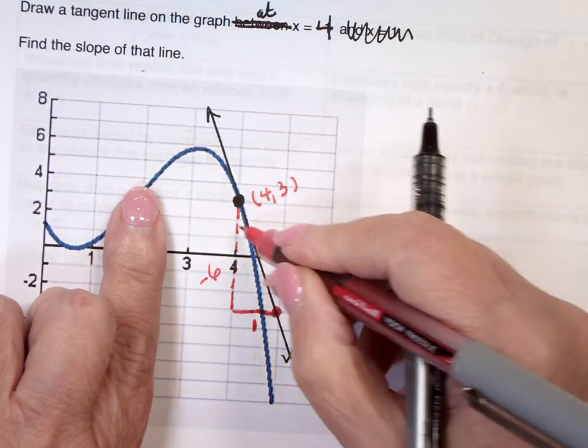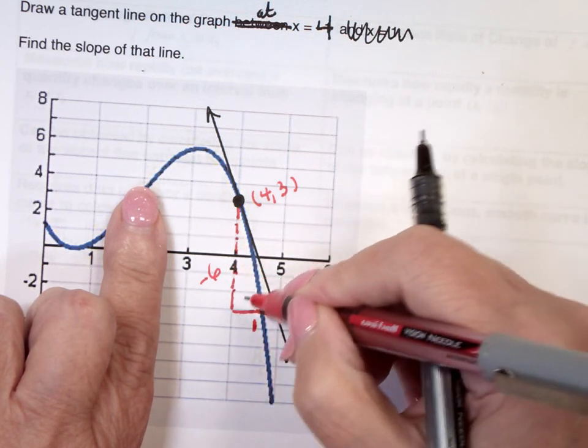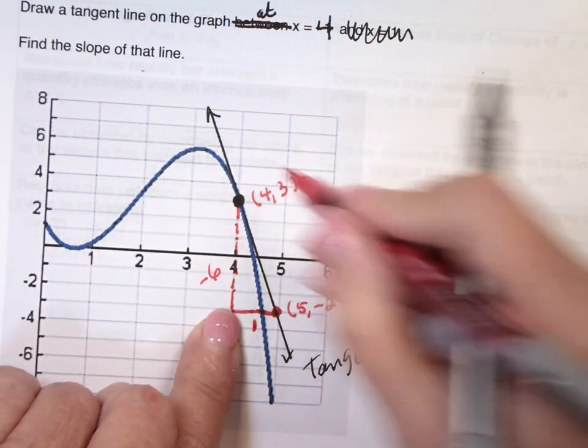Okay, 1, 2, 3, 4, 5, 6. Is it negative 2? Pardon me? Oh, it's a 3.